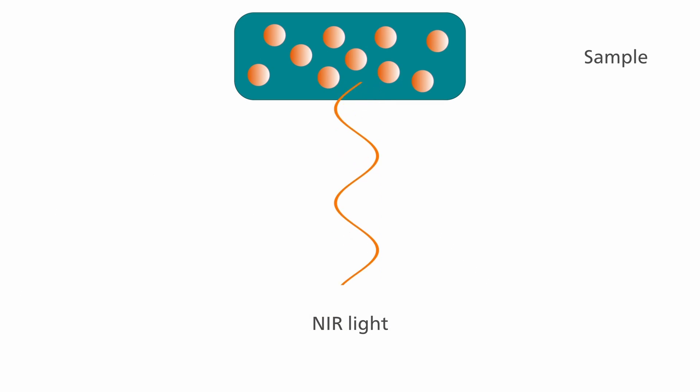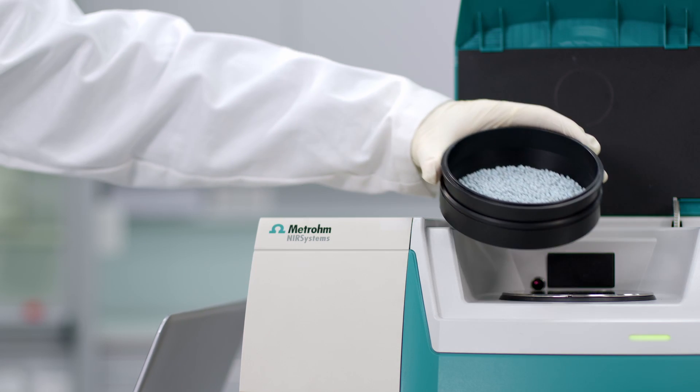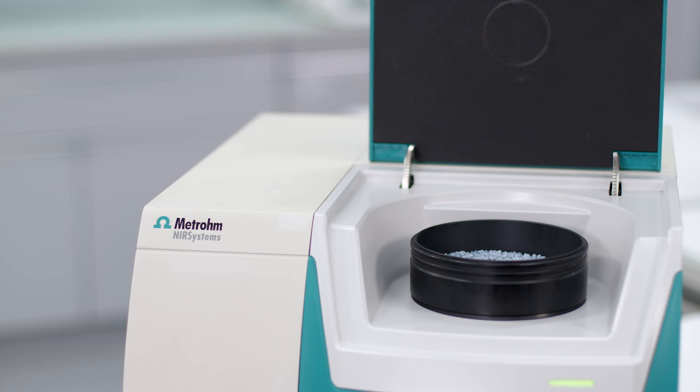Now for the second difference between IR and NIR spectroscopy: the sample penetration by the light. Often, it is only possible to collect information about the surface of a sample when using IR spectroscopy. NIR light, on the other hand, is of higher energy and therefore penetrates deeper into the sample. This makes NIR spectroscopy the ideal choice for studying heterogeneous samples, as information can be collected from a larger sample area.